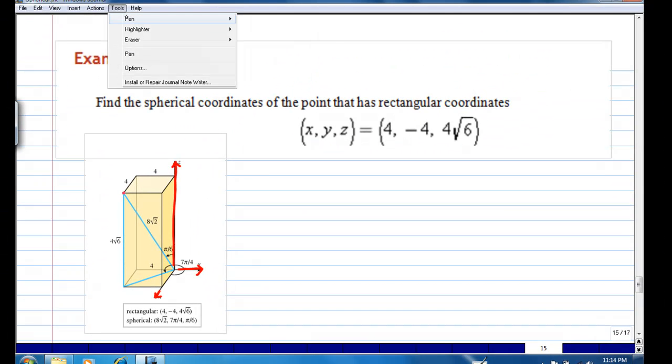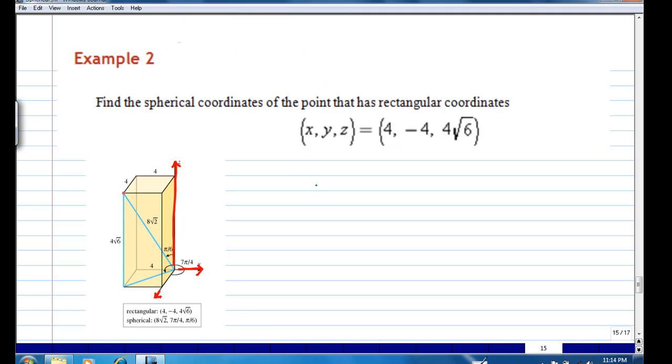Once you locate the point, we are able to find the spherical coordinates. The distance from the origin, rho, is √(x² + y² + z²) which is √(4² + 4² + (4√6)²) = √(16 + 16 + 96) = 4√8 = 8√2.